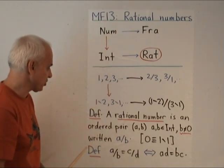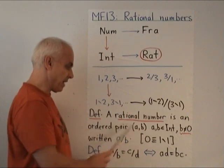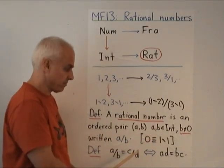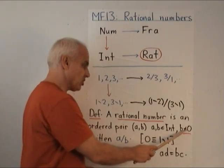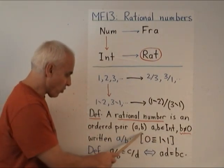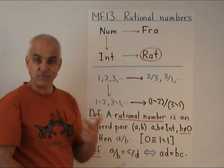Here's the official definition. A rational number is an ordered pair AB, where A and B are integers, and B is not equal to 0. And we write this ordered pair AB as A over B, just the same way as we write a fraction.